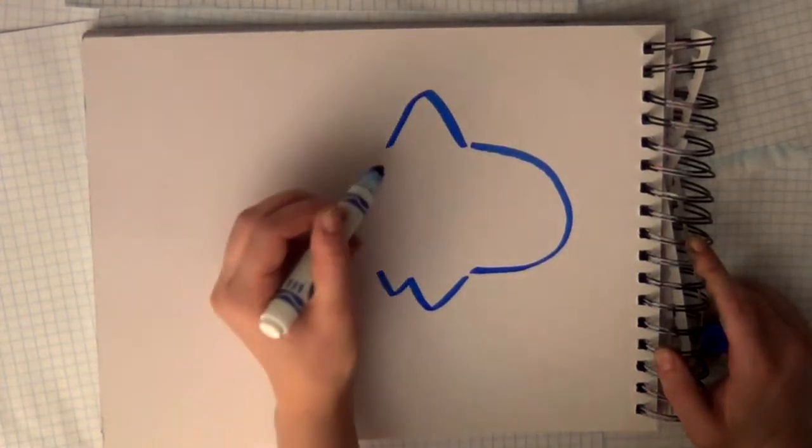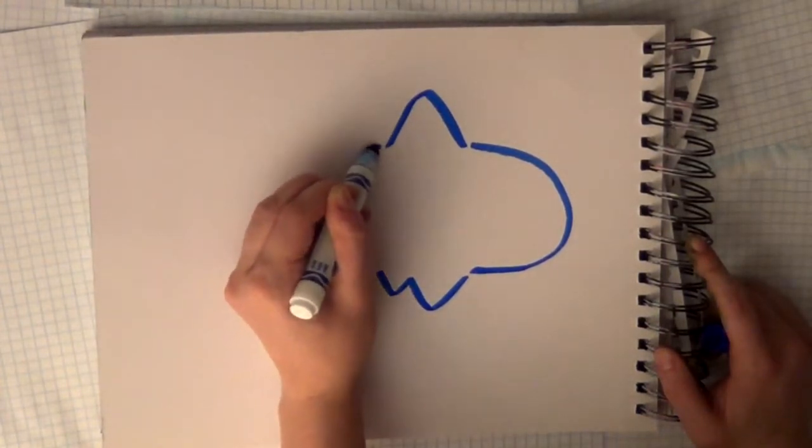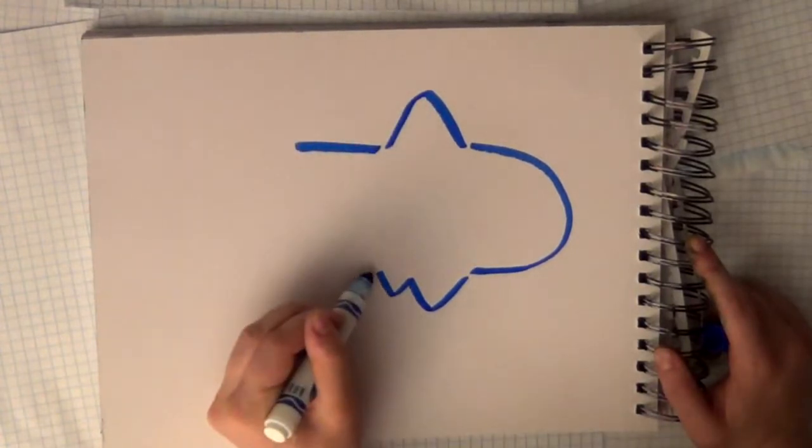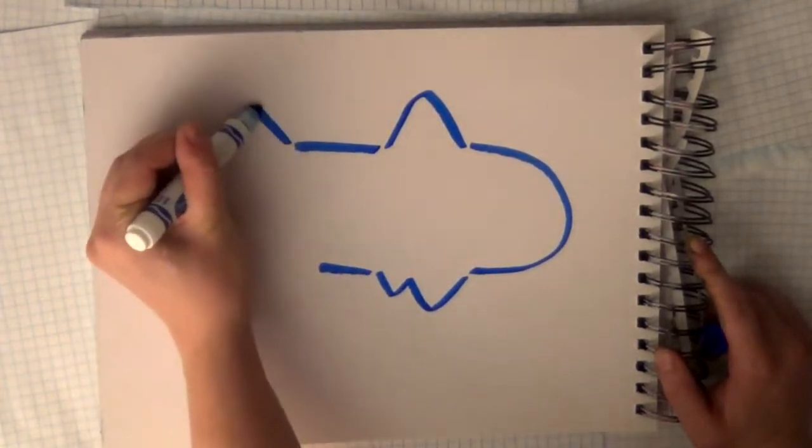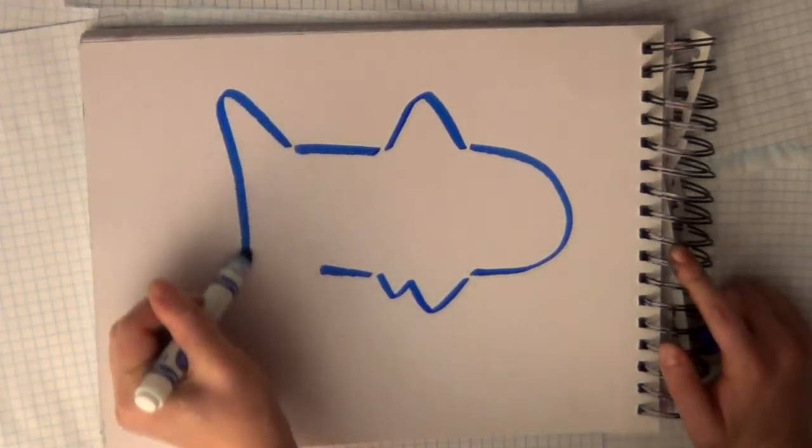After that, you're going to draw two straight lines. Those straight lines are going to lead up to the tail. Connect the two straight lines with the tail.